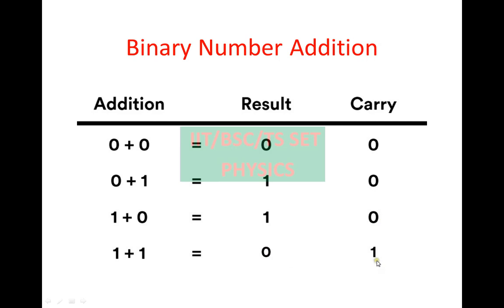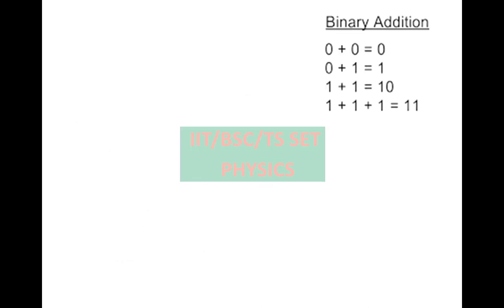When there is a carry, we need to add an extra number. So 1 plus 1: the addition is 0, and we carry 1. The addition result is 0, and 0 plus 1 adjusts the value.